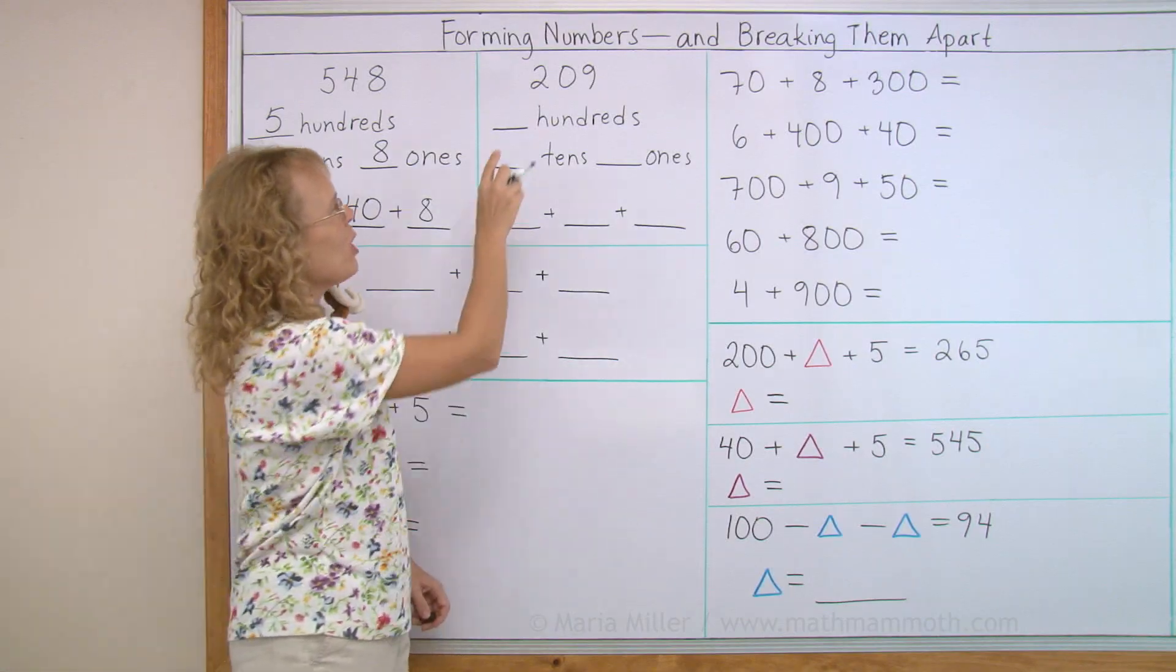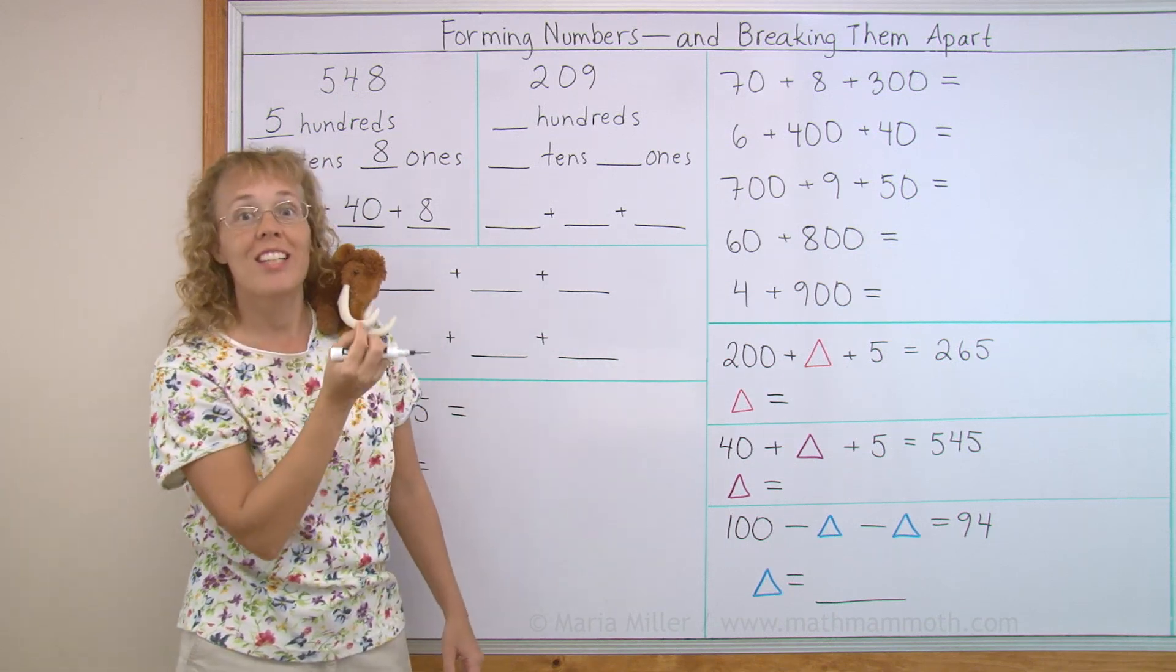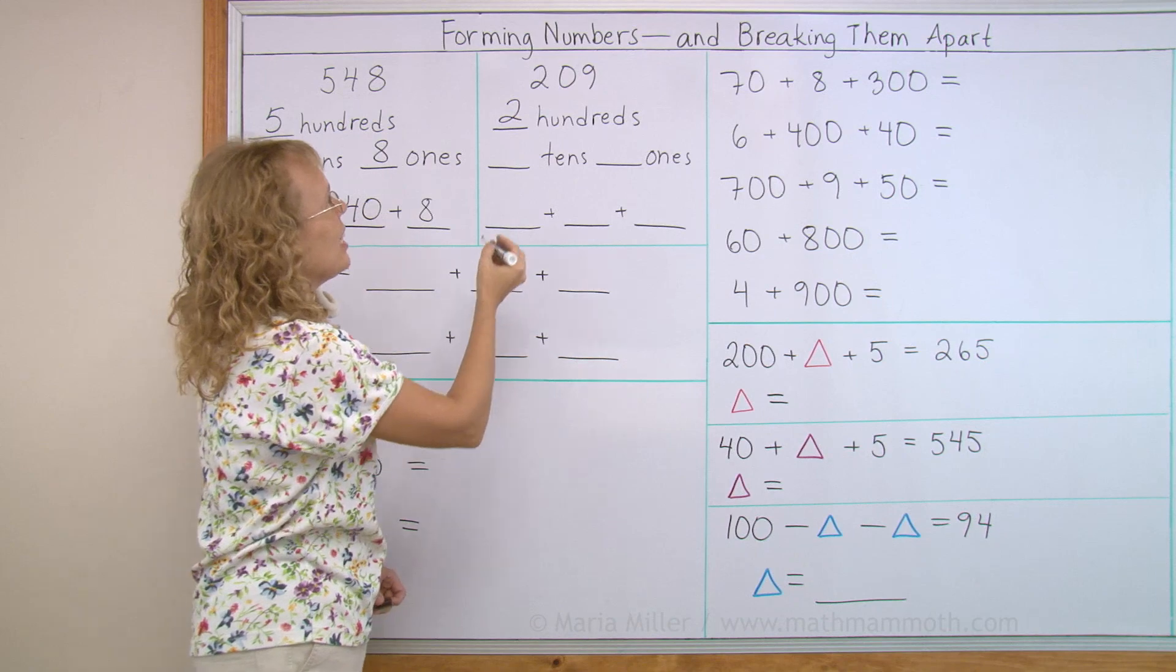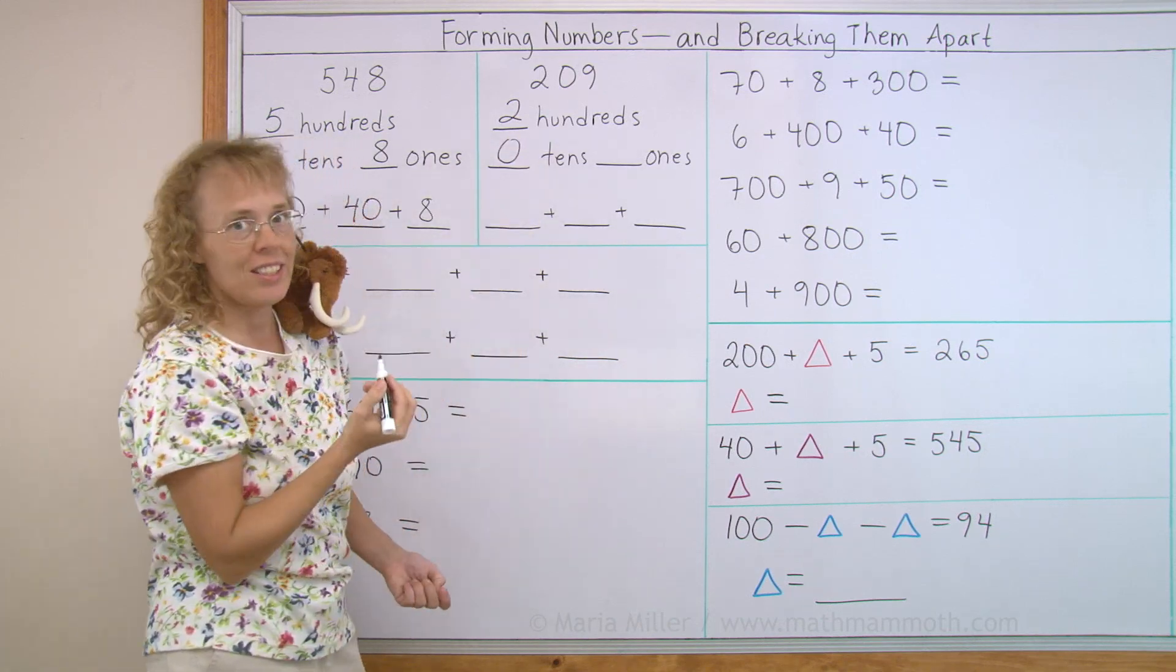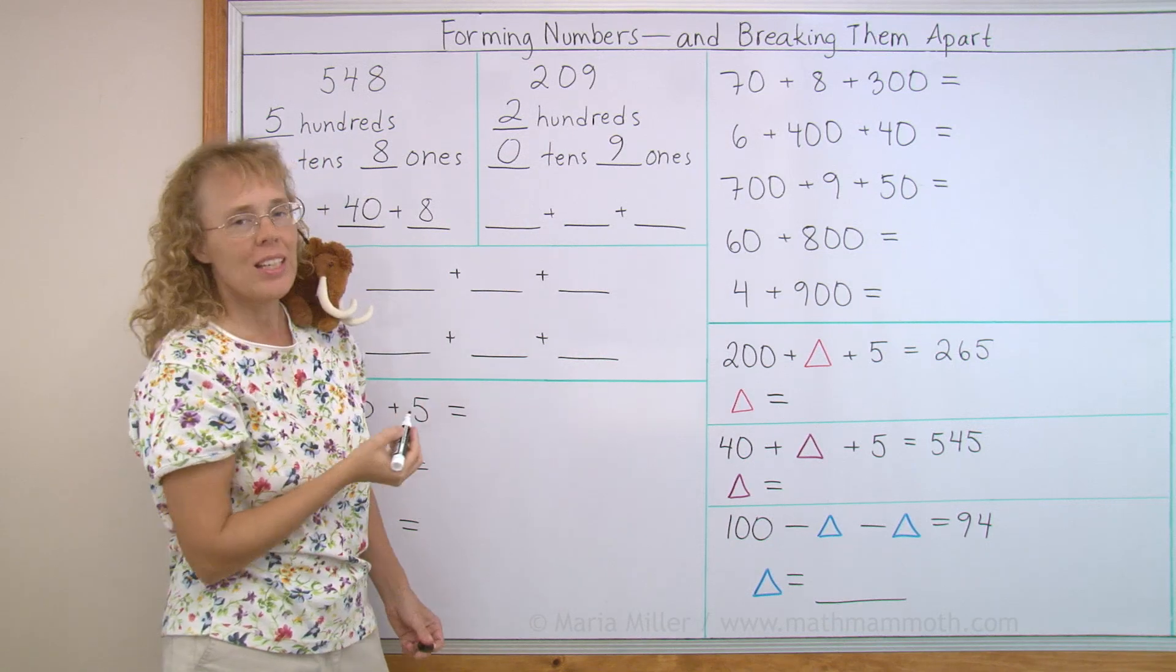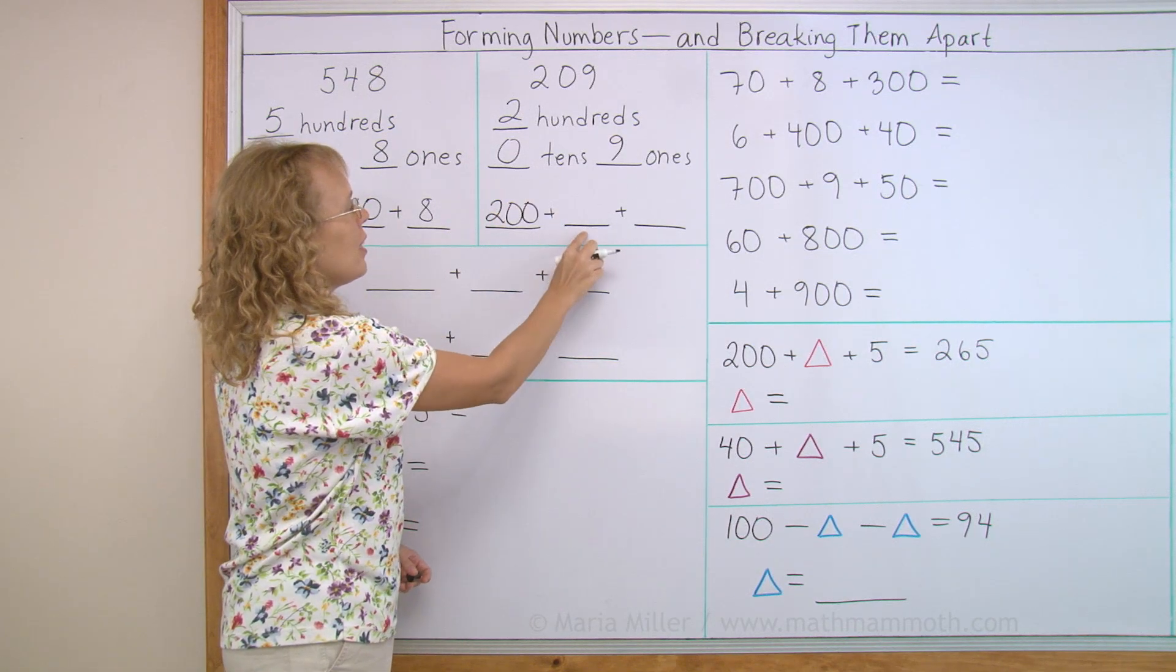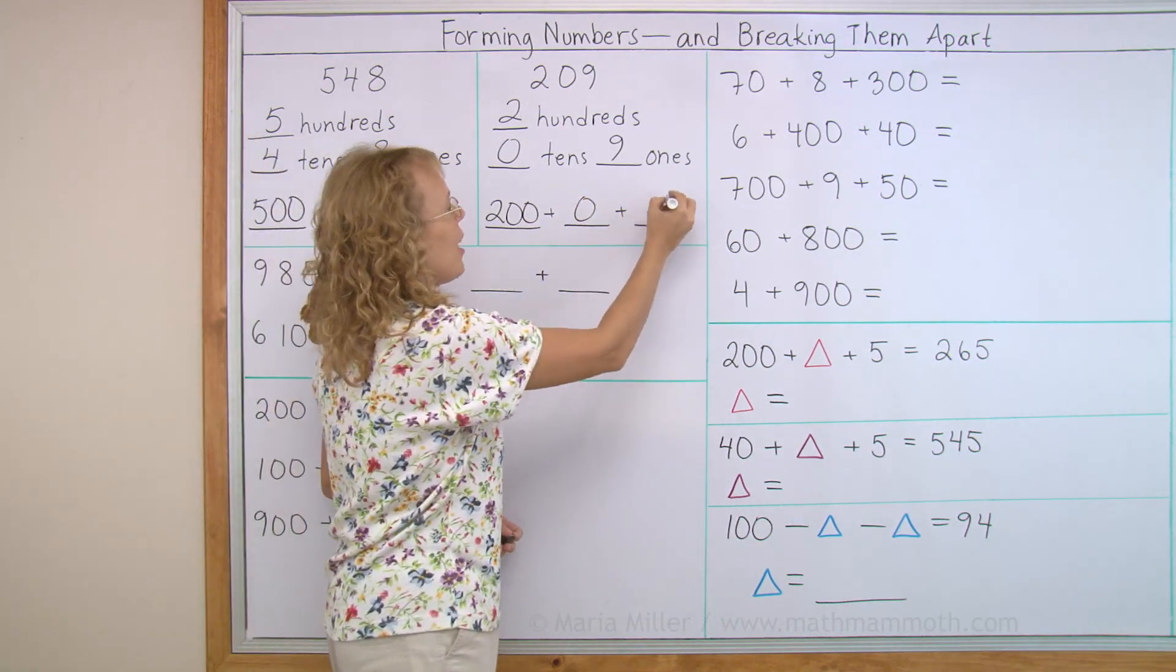Let's try it again. What number is that? Two hundred nine. So it has two hundreds. It has no tens. Zero tens. Notice that. And then nine ones. And as a sum, it is two hundred. And here go the tens. No tens. And then nine.